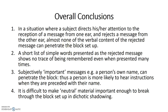Here are the overall conclusions for all of the studies. In a situation where a subject directs attention to the reception of a message from one ear and rejects the message from the other, almost none of the verbal content of the rejected message can penetrate the block set up. A short list of simple words presented as the rejected message shows no trace of being remembered even when presented 35 times, as in experiment one. Subjectively important messages — such as a person's own name — can penetrate the block. Thus, a person is more likely to hear instructions when they are preceded with their own name. It is difficult to make neutral material important enough to break through the block in dichotic shadowing, as shown in experiment three where numbers were used but participants weren't able to remember them.